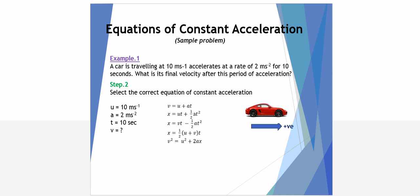Step two is to select the correct equation. We've got a U, A, T and a V. The first equation is the only one available with U, A, T and V. So, that's chosen.